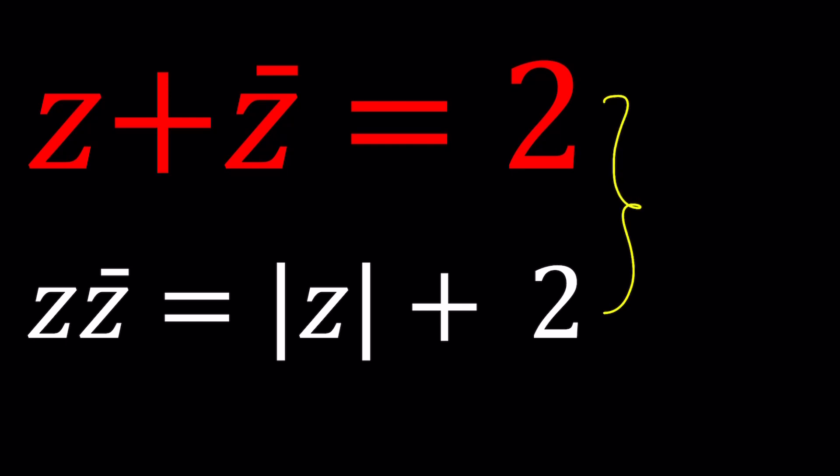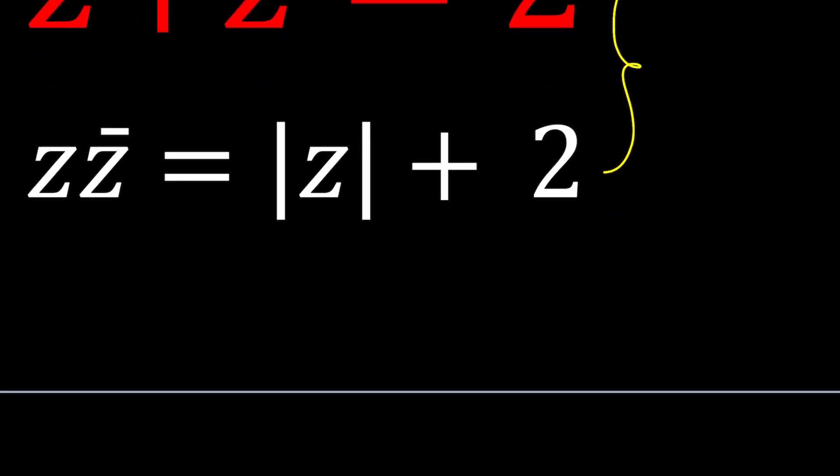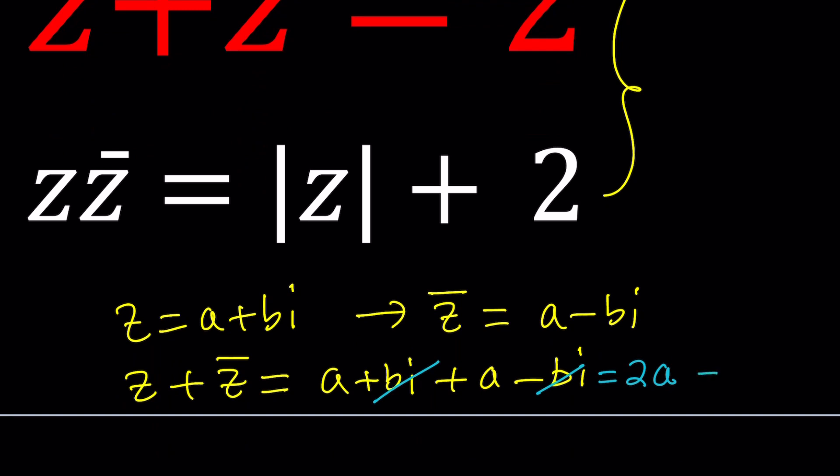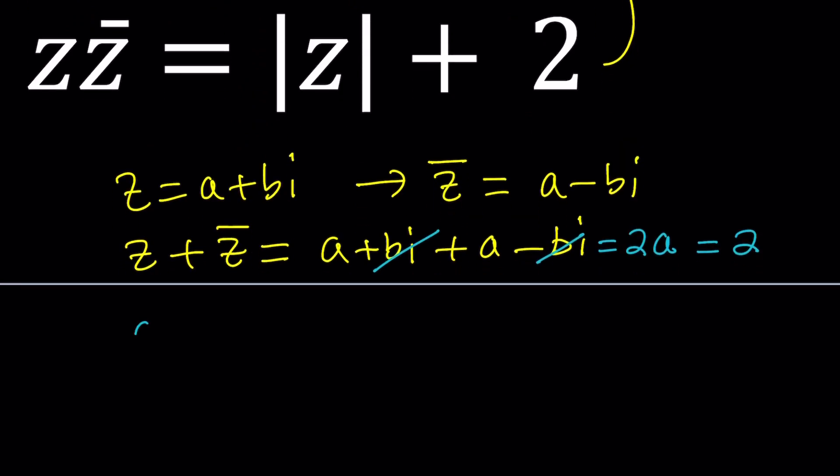I'm going to start with the first equation and replace z with a plus bi. So if you replace z with a plus bi, this means that z bar is going to be a minus bi. And when you add them, z plus z bar, you're going to get a plus bi plus a minus bi. And bi and negative bi are going to cancel out, leaving us with 2a. And we know that z plus z bar is equal to 2, which means that a is equal to 1.